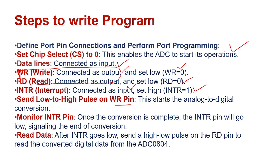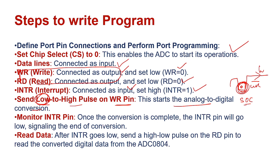When the write pin gets a high-to-low transition — a falling edge, write goes to 0 — that starts the conversion. Once the start of conversion happens, write goes back to high, a low-to-high pulse. Then interrupt: initially interrupt is high, once conversion is complete interrupt goes low. Once interrupt goes low, send a high-to-low pulse on read. Once read goes to 0, read the converted digital data from ADC0804.